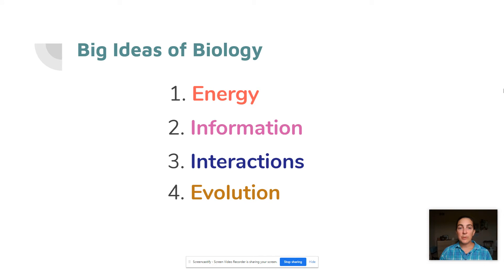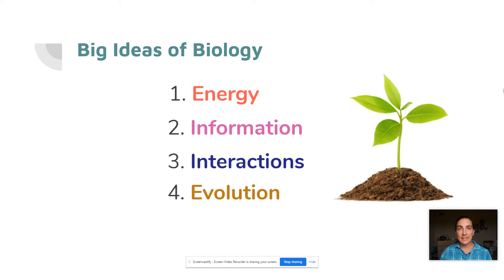These four themes really tie together everything we're going to study this year. In this first unit, you're going to get an introduction to all four of them, mainly through the lens of studying plants. We're going to spend a lot of time looking at the adaptations of plants and how different features have evolved to help them best survive. We'll look at how plants take in energy from the sun and use it for photosynthesis, how plants respond to information from their environment to regulate chemical processes, and how plants and other organisms interact as energy flows throughout an ecosystem.